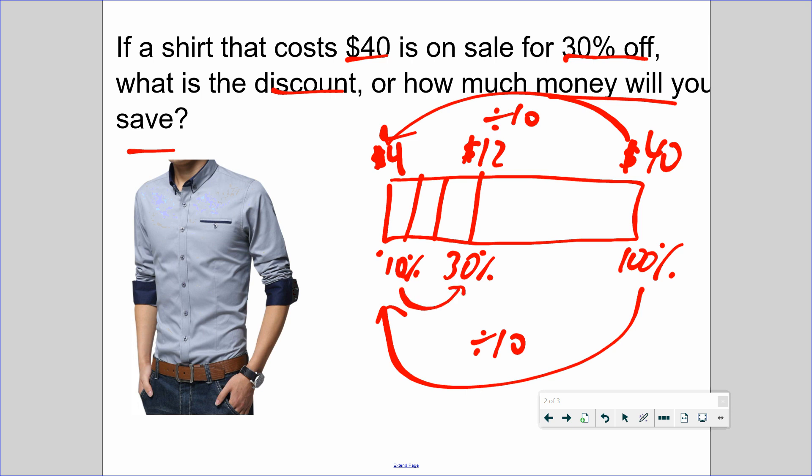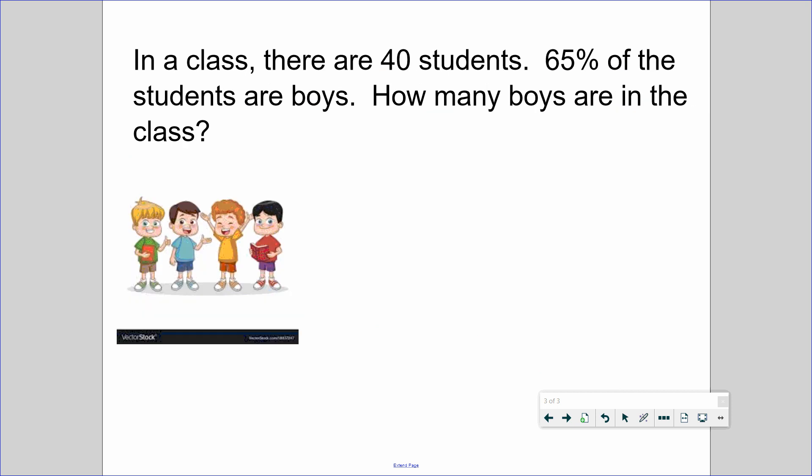How many groups of 10% goes to 30%? 3 times. So 4 times 3 is $12. So if I buy a shirt for $40 and I use a 30% off coupon or the sales rack says 30% off, I save $12.